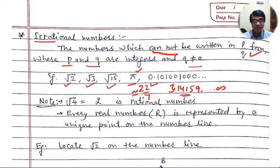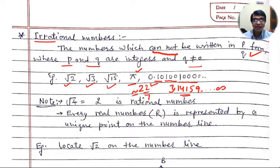Now, why is the decimal number 0.10100100... irrational? Because it is 0.10, 1, 0, 0, 1, triple zero and so on — the zeros are increasing, meaning the same set of digits is not recurring. Here, if it were 0.101010 up to infinite, that would be rational. But here it is 0.10, 1, double zero, 1, triple zero and so on. That is why it is an irrational number.